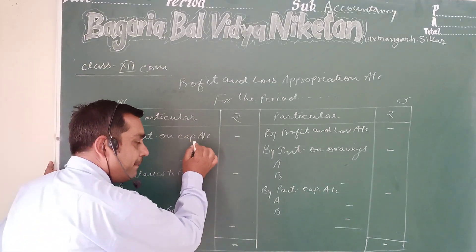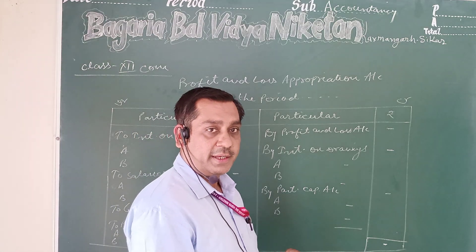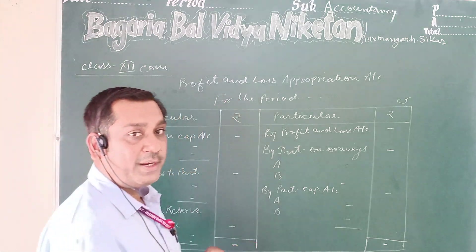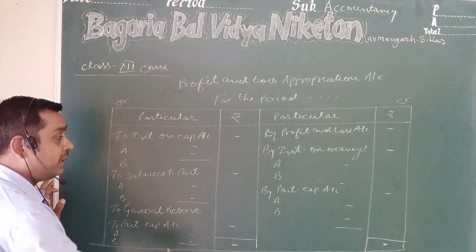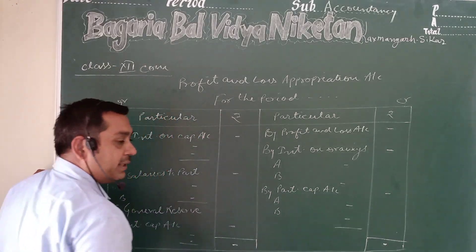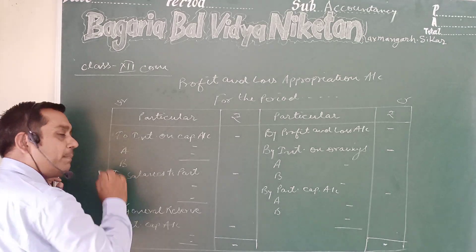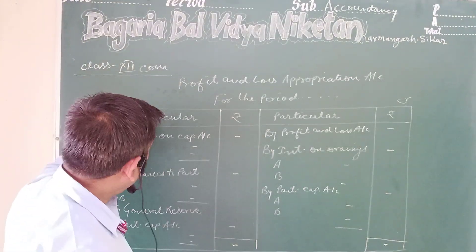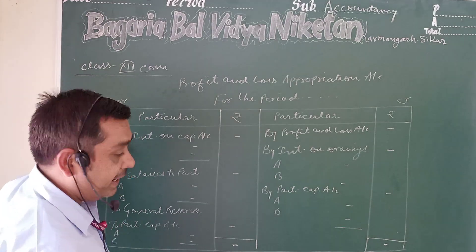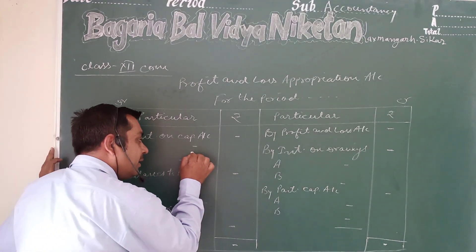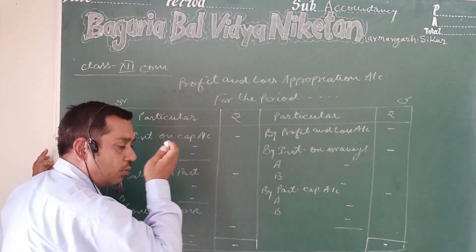For example, interest on capital — when a partner invests capital in the business, interest is provided to them on that capital, and it comes on the debit side. As you can see in this format, assuming there are two partners A and B, the interest on capital is divided between partners A and B separately, and the total amount is written in the amount column.